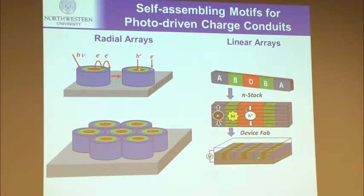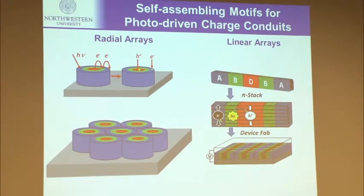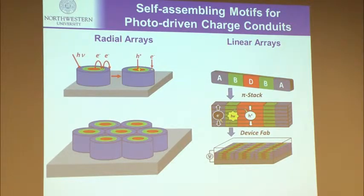You can also do this in a linear system. If you have a donor, a bridging molecule, and an electron acceptor that stack together and generate a charged pair, splitting the exciton generated by light, electrons can move in one conduit and holes in another — as long as you can make an ordered assembly where conduits for opposite charges are isolated from one another. This is the basic idea behind some of the work I'm going to tell you about.